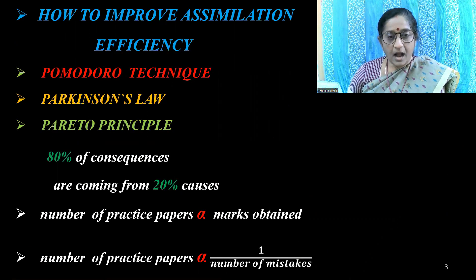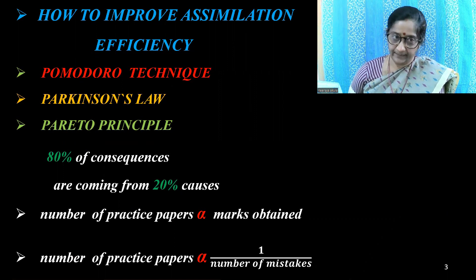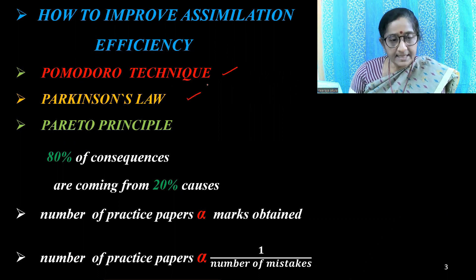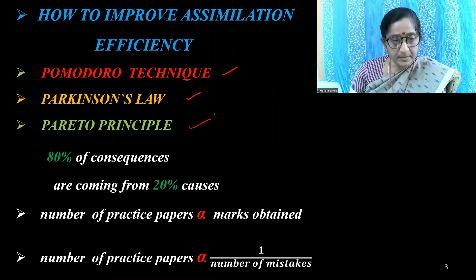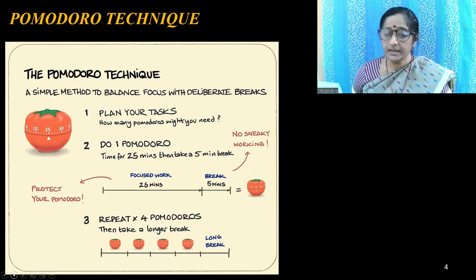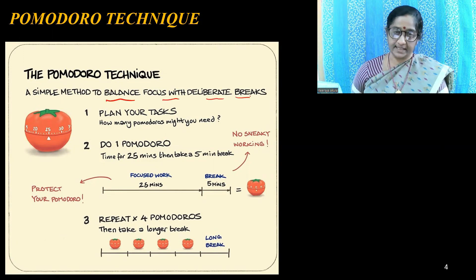It is possible to improve Assimilation Efficiency through the Pomodoro Technique, Parkinson's Law, and Pareto Principle. The Pomodoro Technique is a simple method to balance focus with deliberate breaks.